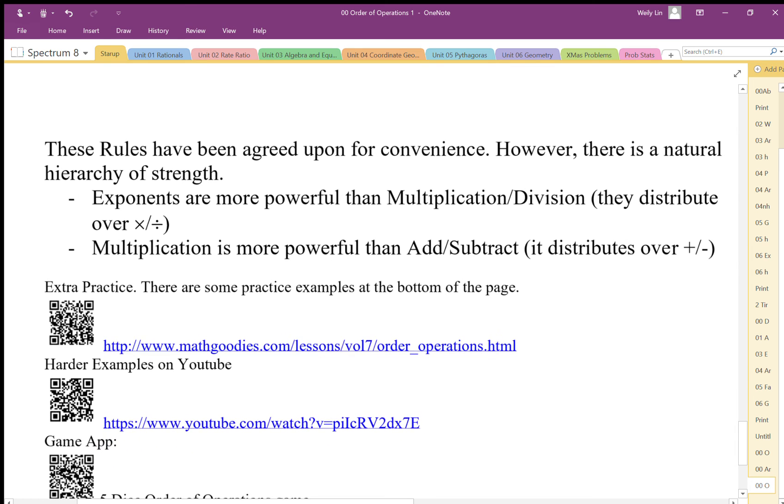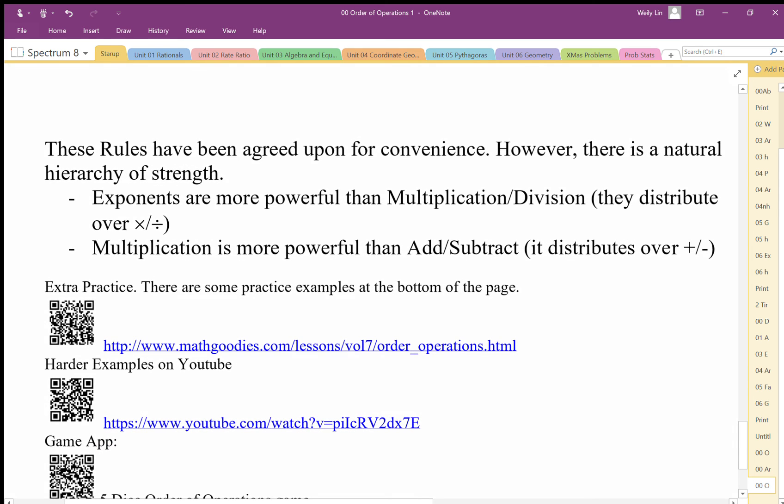BEDMAS is one way you can look at the rules everyone agreed upon, but there's also this idea of natural order of strength. Exponents are more powerful than multiplication and division. Multiplication and division are more powerful than addition and subtraction. Exponents can distribute over multiplication and division, and multiplication can distribute over addition and subtraction, but exponents don't distribute over addition and subtraction.